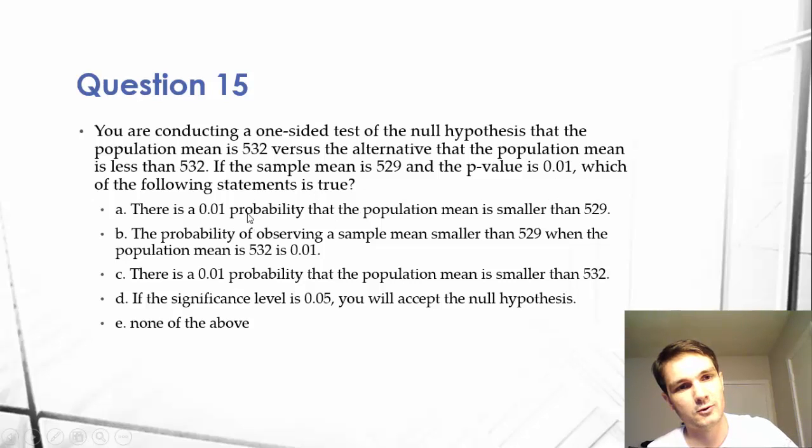which of the following statements is true? There's a 1% probability that the population mean is smaller than 529. The probability of observing a sample mean smaller than 529 when the population mean is 532 is 1%. There's a 1% probability that the population mean is smaller than 532.